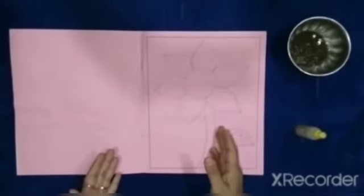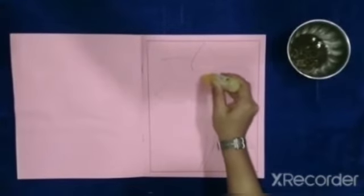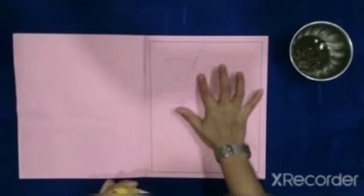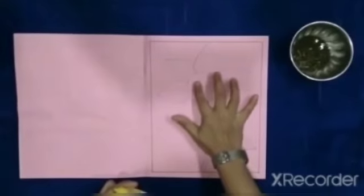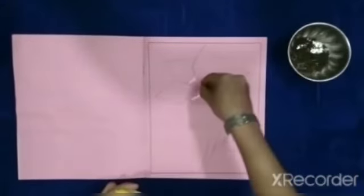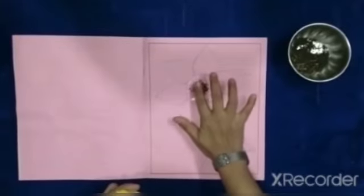So you can see I have made this beautiful sunflower. Now I will put some glue in the middle portion of the sunflower and paste the tea leaves in it.